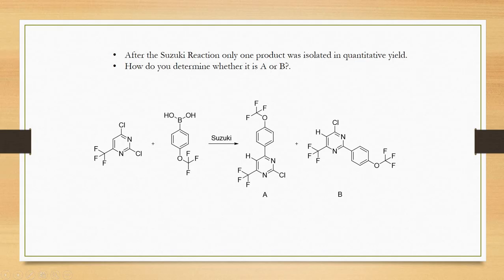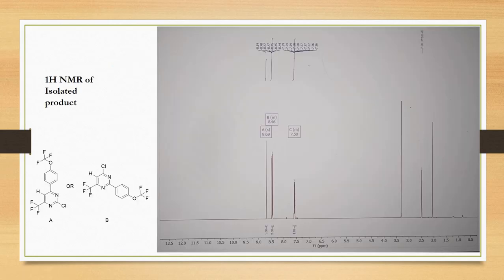This cannot be confirmed just by looking at the 1H NMR. If you see, there are three signals. These multiplets belong to the protons of this phenyl ring, and this singlet is from the hydrogen of this heterocyclic ring. Whether it is A or B, you will have the same pattern of NMR, so 1H NMR is not enough to distinguish between these two molecules.